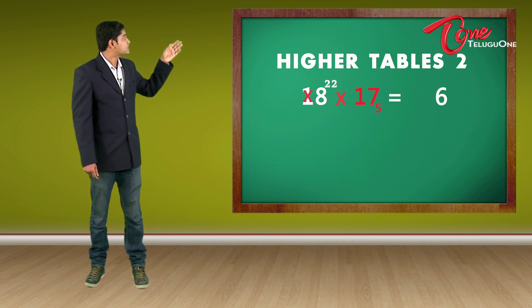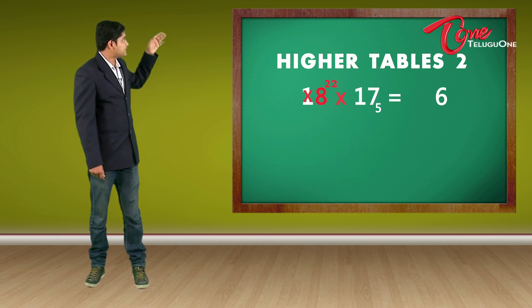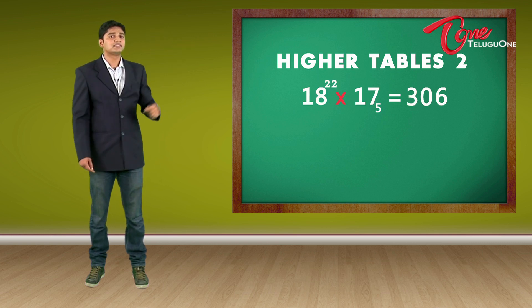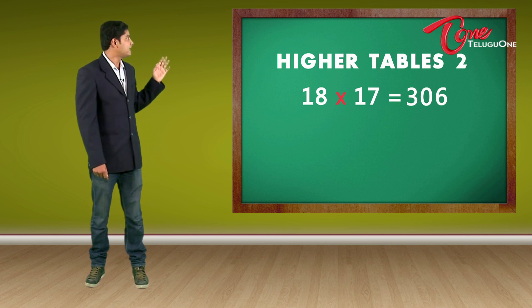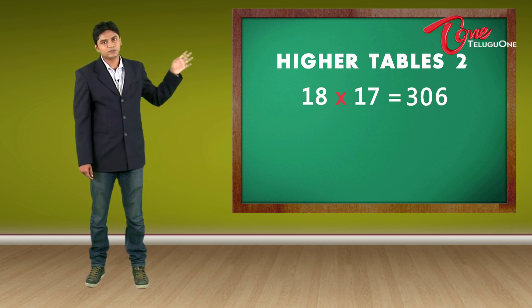There is an extra step, that is the third step. We are going to add this 22 plus 8 as 30 to get our answer as 306. So 18 times 17 would be 306.